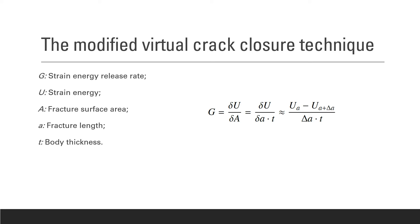We can now assume a body with a constant thickness of t, and the area of the fracture surface can now be written as a times t, and so G can be written as shown here.